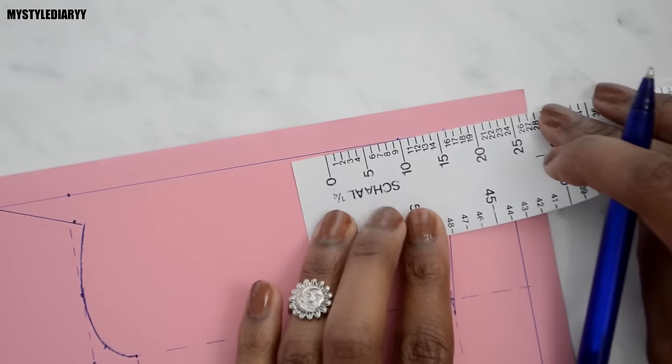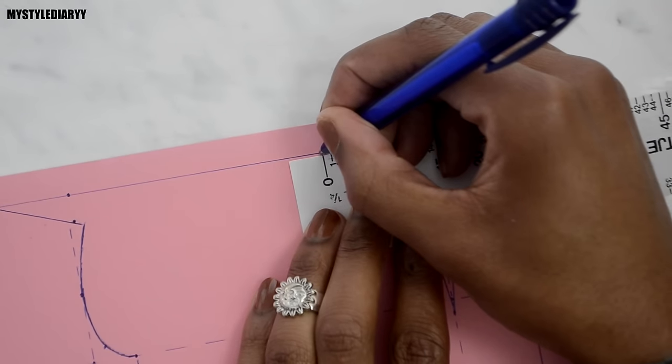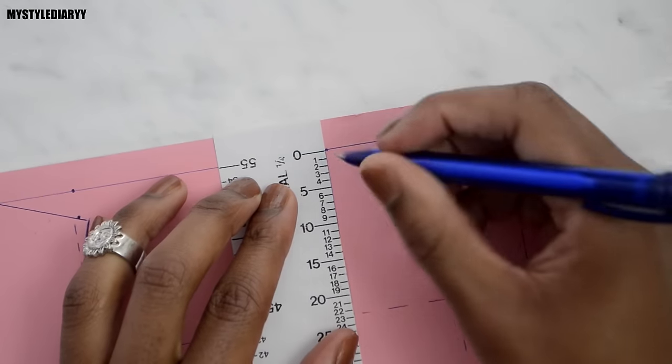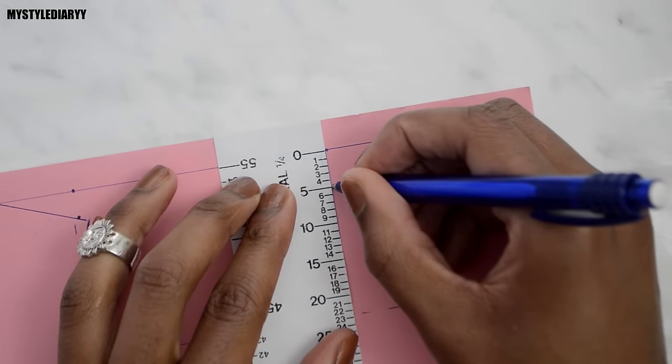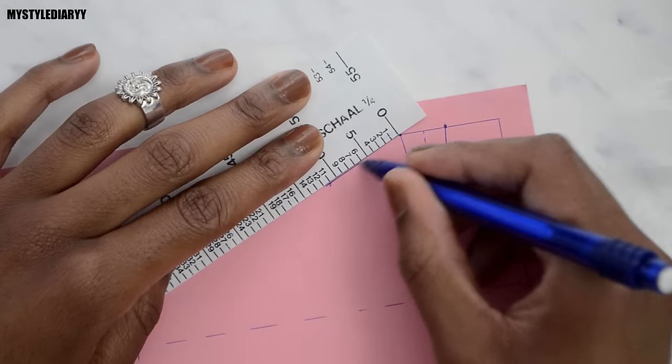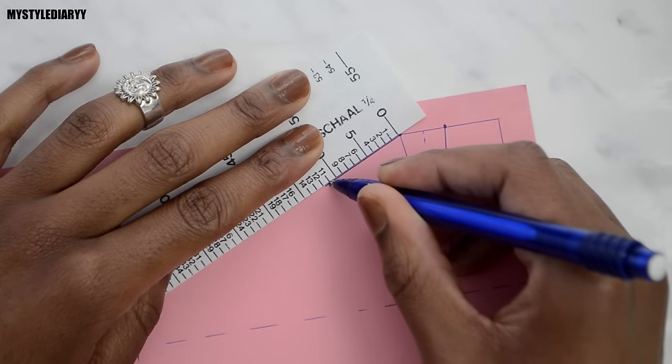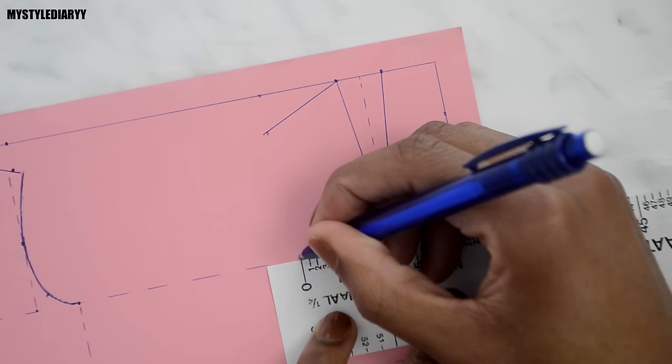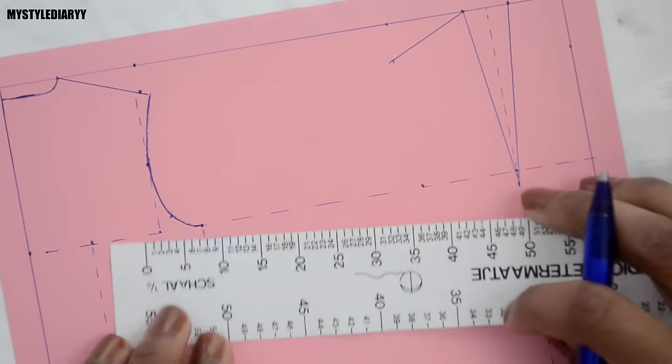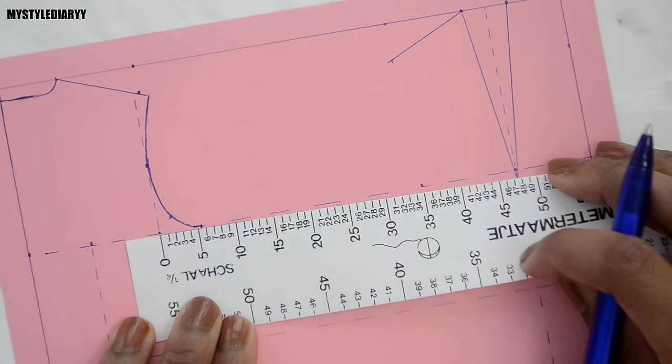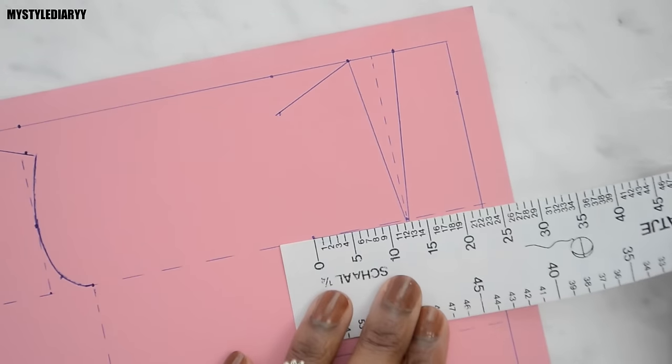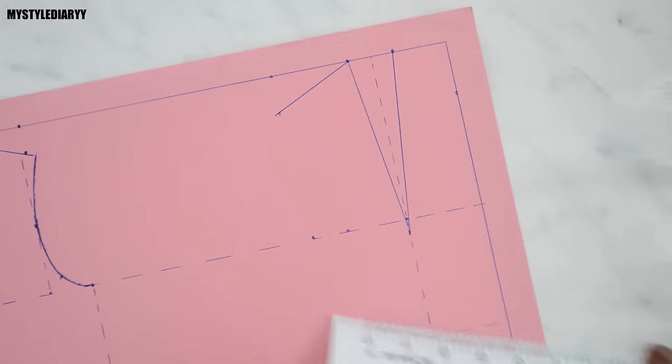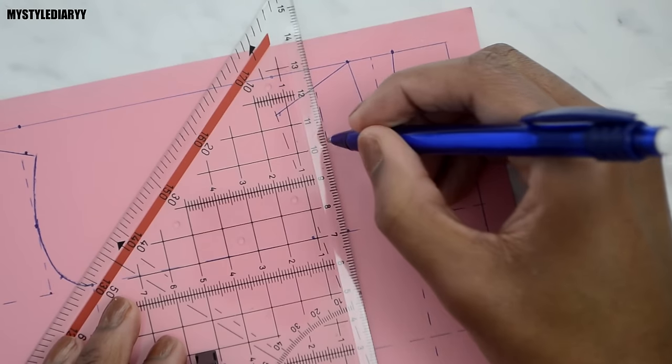From the neck point measure down ten centimeters to the left and four centimeters downwards. Draw your shoulder measurement. Mark down a quarter of the bust measurement. Measure the distance between the back width point and bust point of the back bodice. Use that measurement for the new point. You can also use your chest measurement if you prefer that.